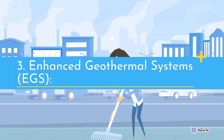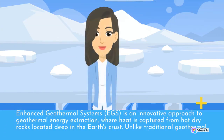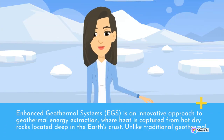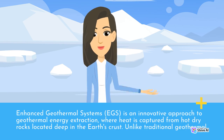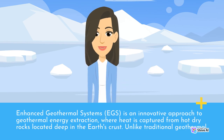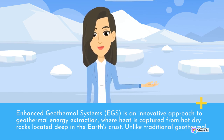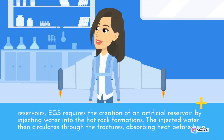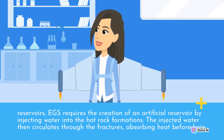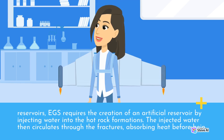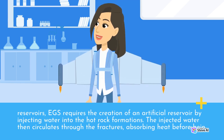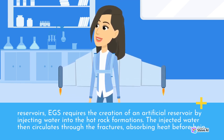3. Enhanced Geothermal Systems (EGS). EGS is an innovative approach to geothermal energy extraction, where heat is captured from hot dry rocks located deep in the Earth's crust. Unlike traditional geothermal reservoirs, EGS requires the creation of an artificial reservoir by injecting water into the hot rock formations. The injected water then circulates through the fractures, absorbing heat before being extracted.